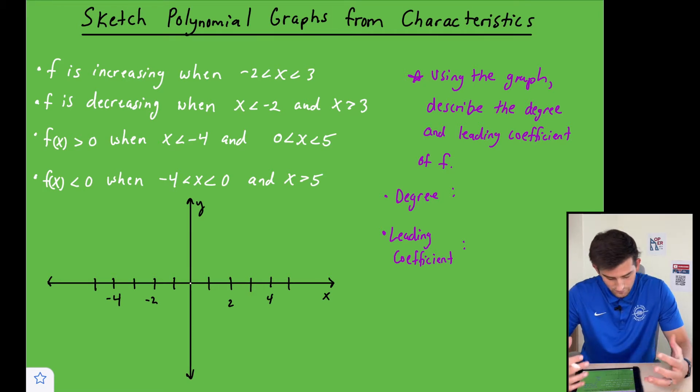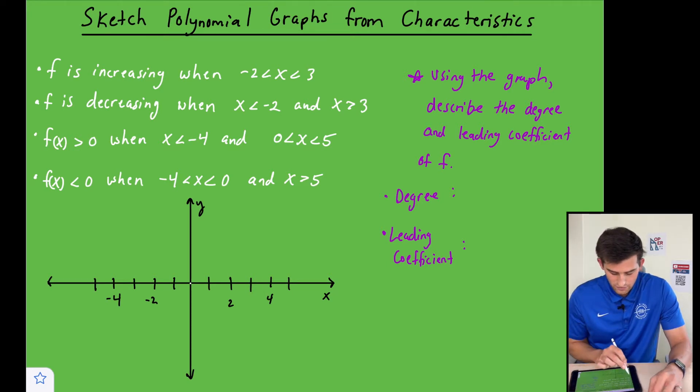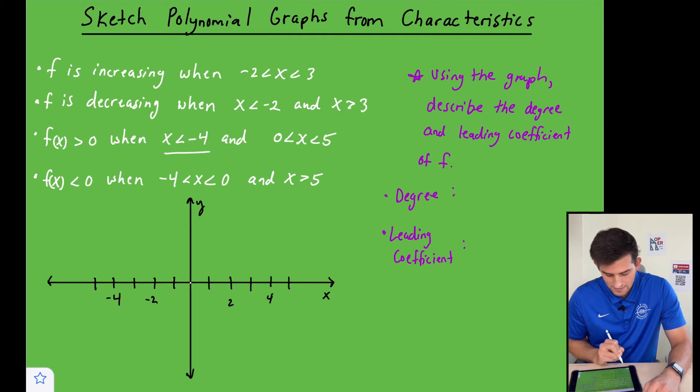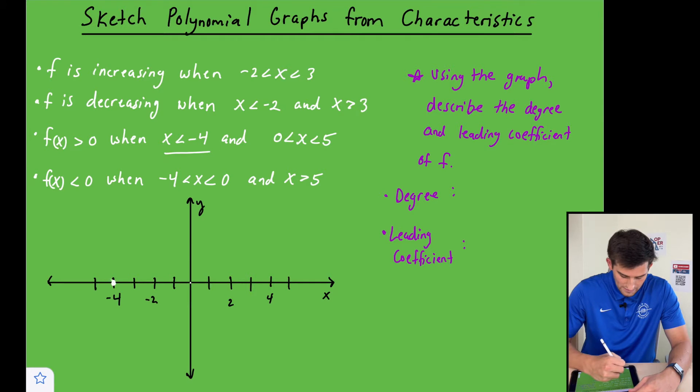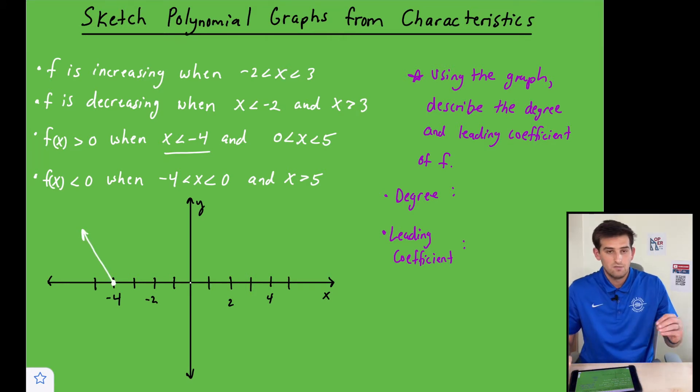So we have four different characteristics here, and the one I'm going to focus on first is our third one here. It says f of x is greater than zero when x is less than negative four. So what that tells me is once we're at negative four and to the left of negative four, less than negative four, our graph is above the x-axis. So I'm going to draw that part right there.